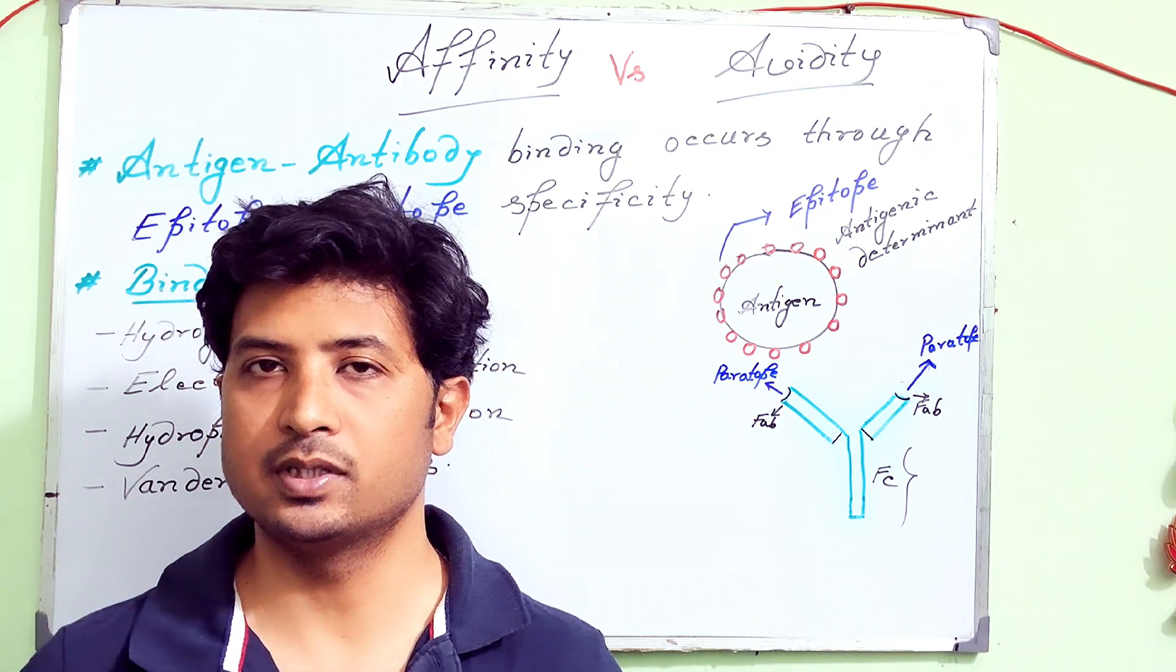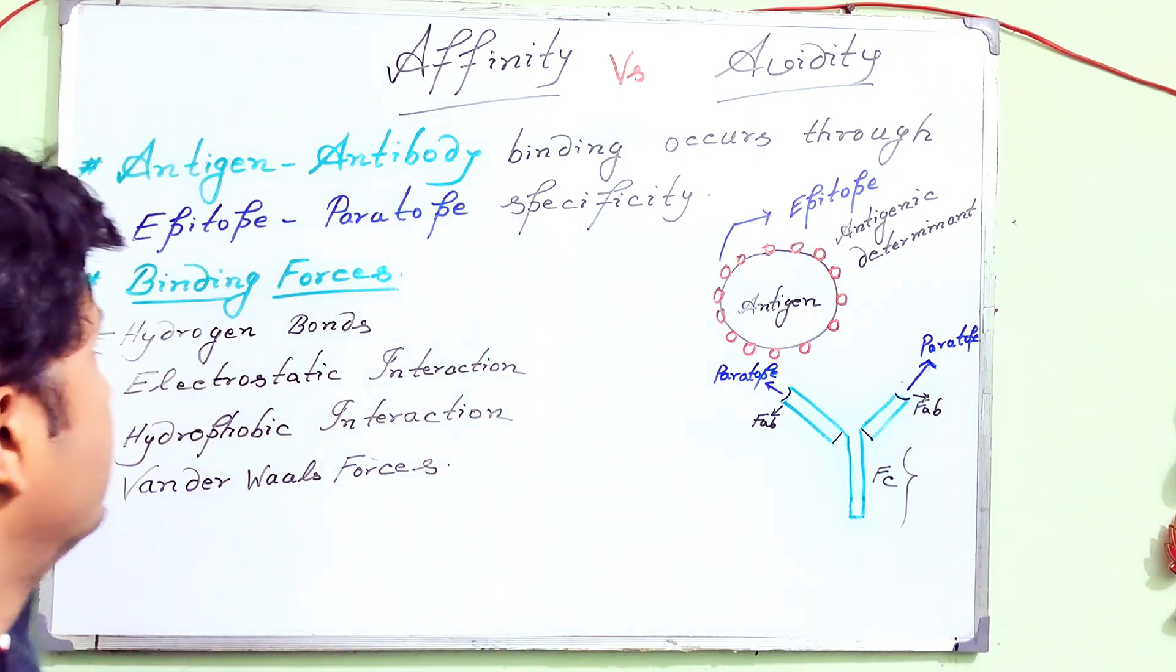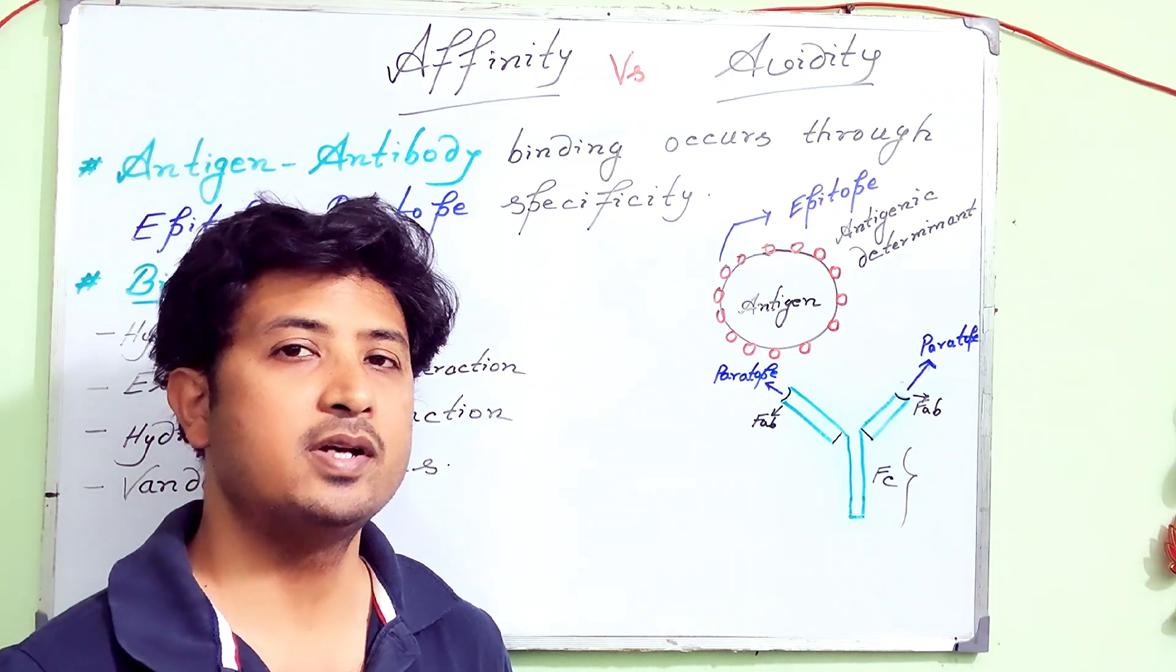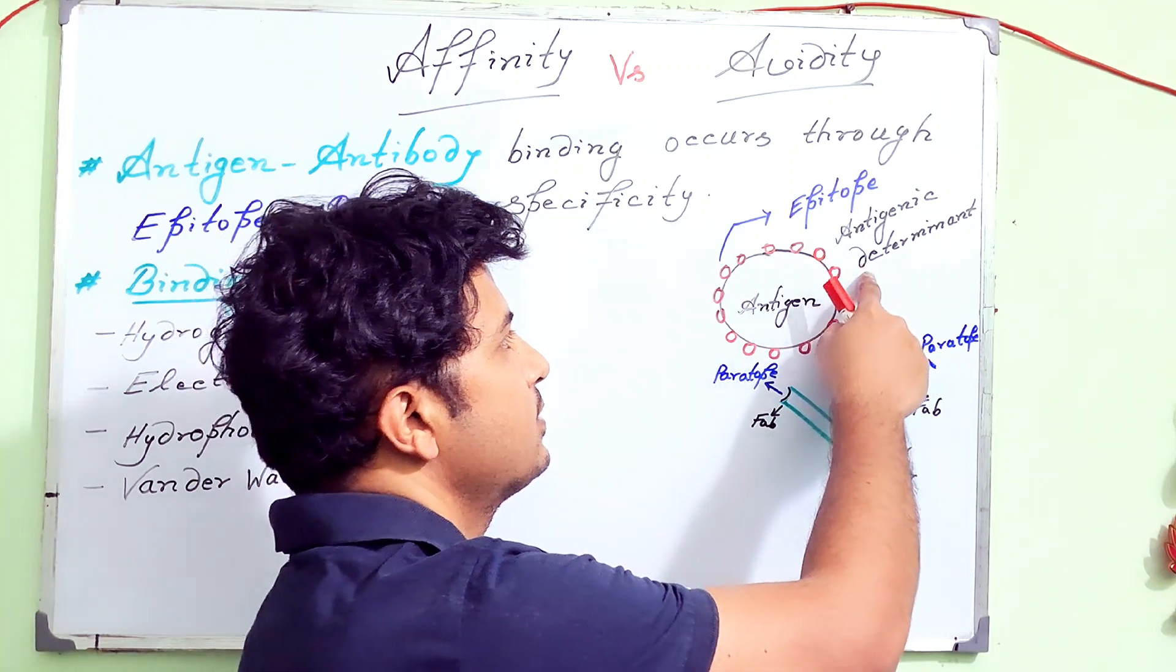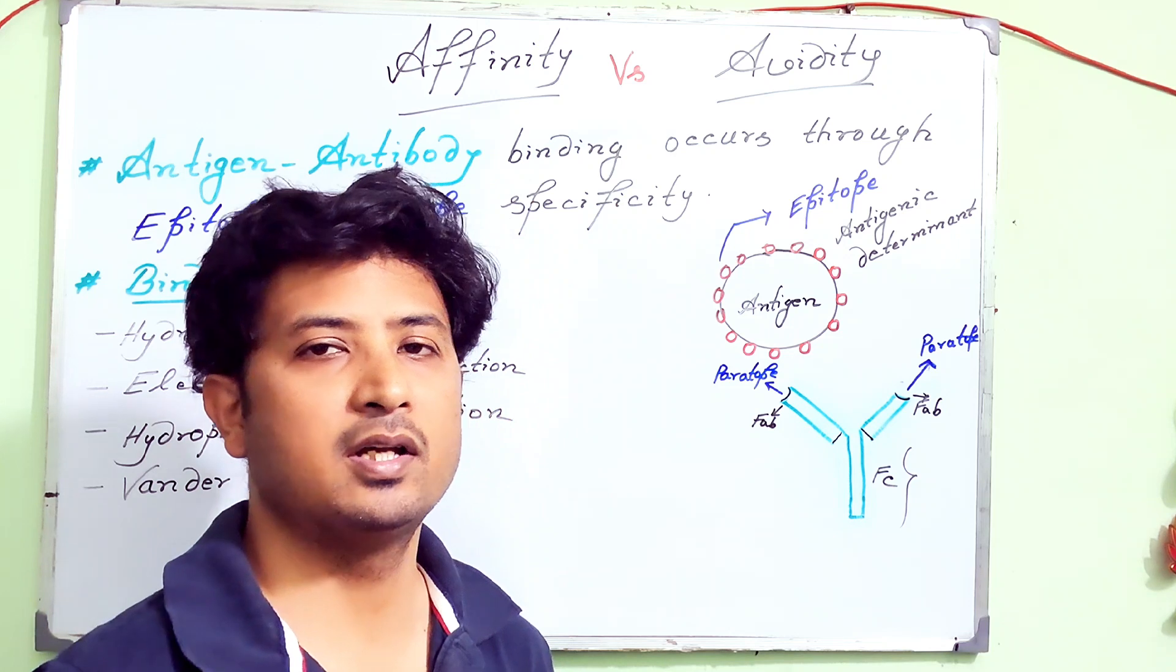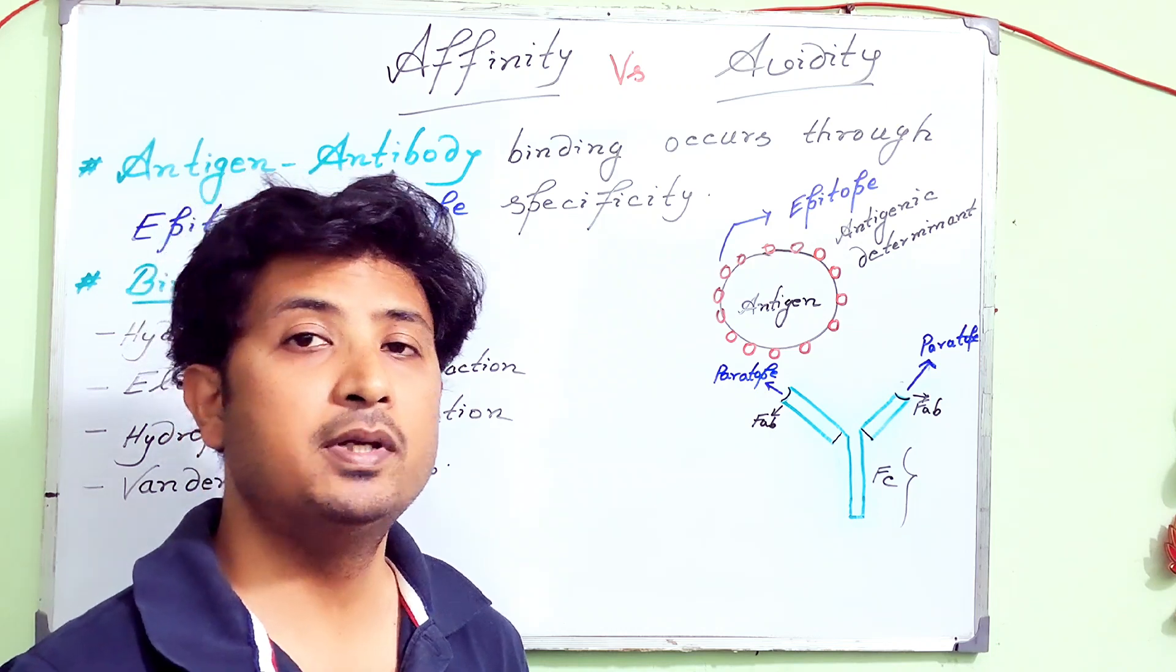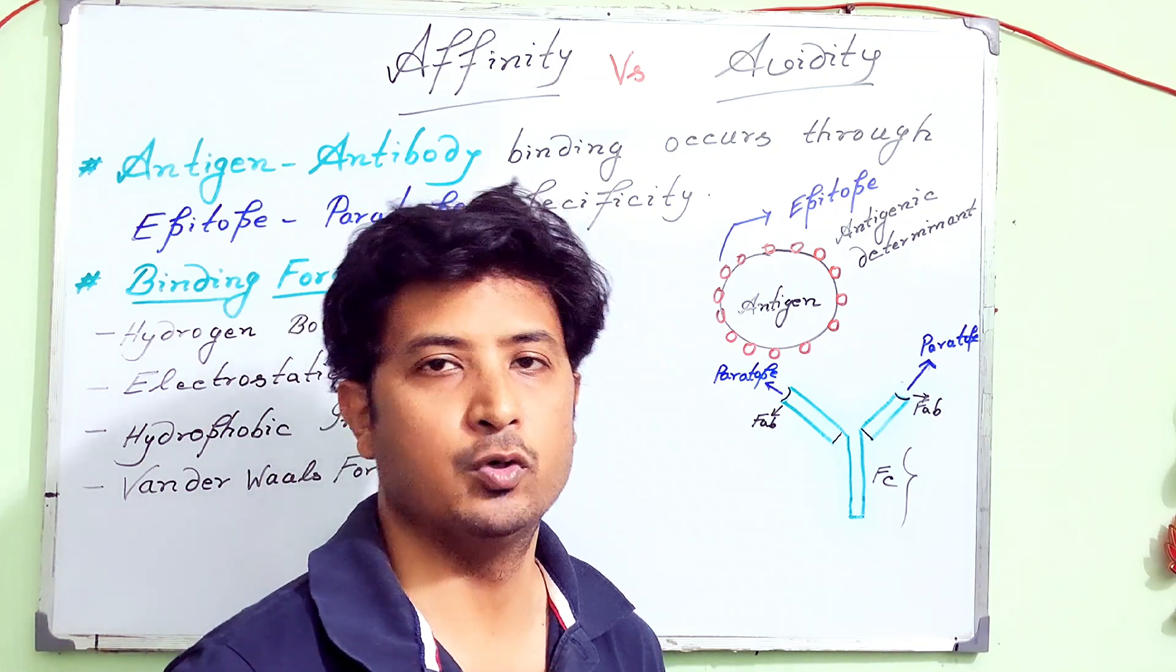Let's understand the concept from the beginning. First, antigen-antibody binding occurs through epitope-parotope binding. What is epitope? Epitope is the antigenic determinant present on the surface of an antigen—it may be a bacteria, virus, fungi, or any kind of antigen. The markers which will be recognized by the antibodies are called epitopes or antigenic determinants.